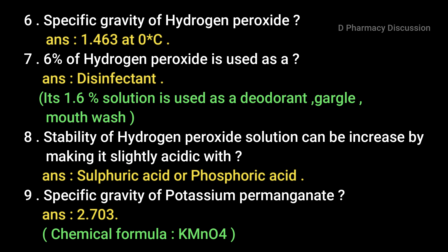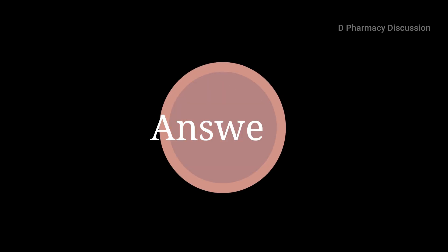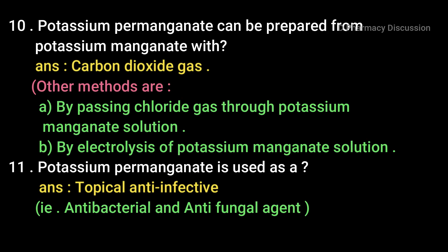Ninth question: specific gravity of potassium permanganate is 2.703 and its chemical formula is KMnO4. Potassium permanganate can be prepared from potassium manganate with carbon dioxide gas. Other preparation methods include passing chlorine gas through potassium manganate solution, or by electrolysis of potassium manganate solution. Potassium permanganate is used as a topical anti-infective agent — as an antibacterial and antifungal agent.